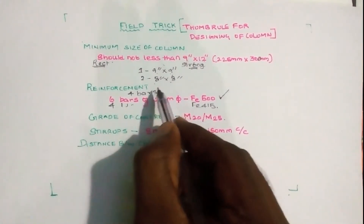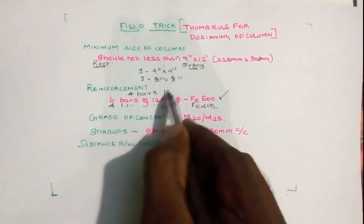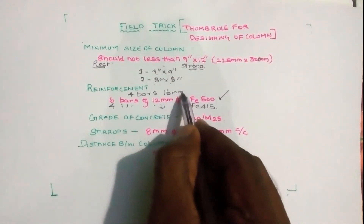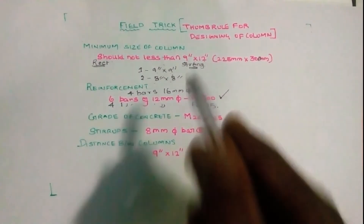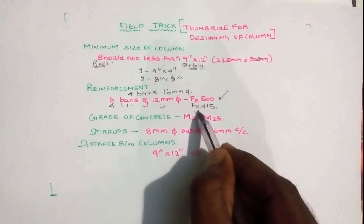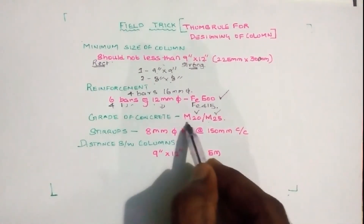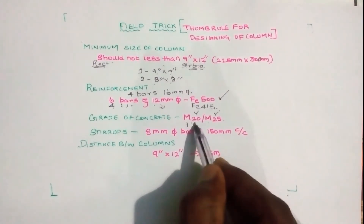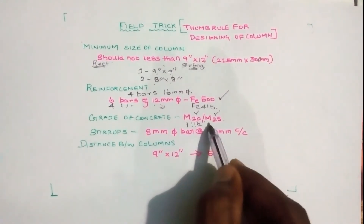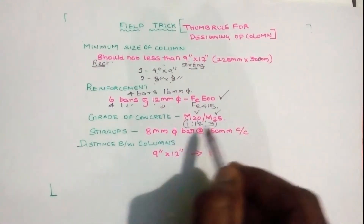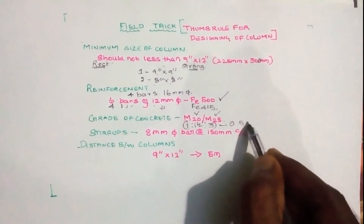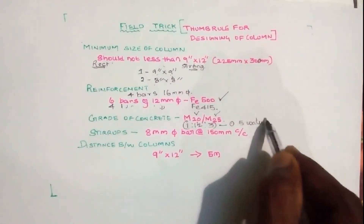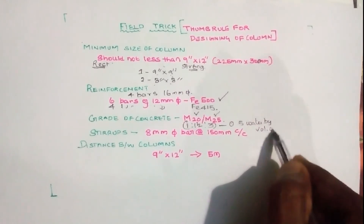We use 16 mm diameter bars to reinforce the column. The next rule is the grade of concrete. In the field, we use M20 grade concrete. The mix proportion of M20 is 1:1.5:3 by volume.